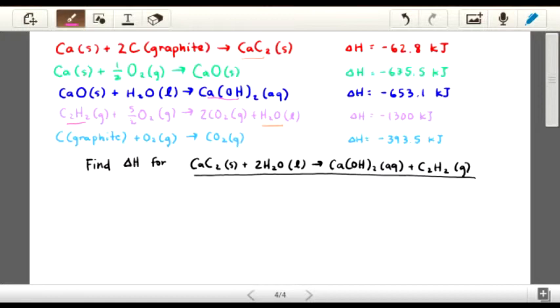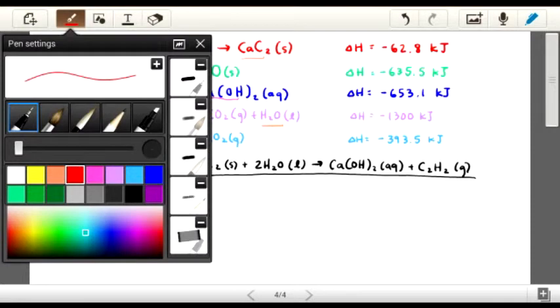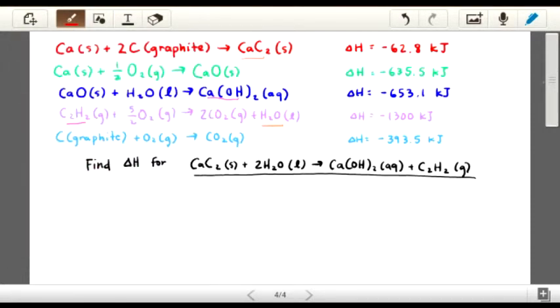So first of all, I'm going to bring down the first red equation, but remember I have to switch it because CaC2 is on the right side and we want it on the left. So I'm going to write it switched, and the enthalpy change for this is going to change signs because it becomes an endothermic reaction. So it's positive 62.8 kJ.